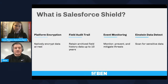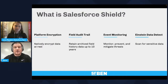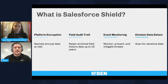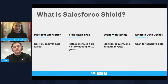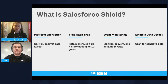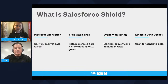The second component is field audit trail, which allows you to extend your history tracking for up to 10 years. If you have legal compliance requirements, or just from a business perspective, being able to retain field history for longer than 18 months in the UI and 24 months in the API is a very common requirement. Third is event monitoring — user activity monitoring, which is only available with Salesforce Shield. You can track what users are doing in the system from both a security and performance standpoint, and there are great features for seeing what users are doing within the system.